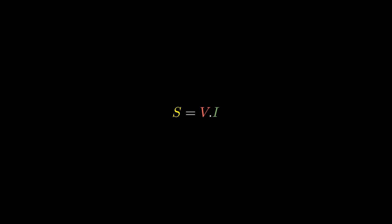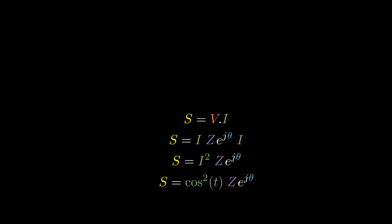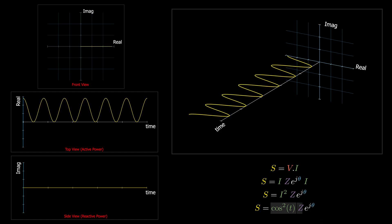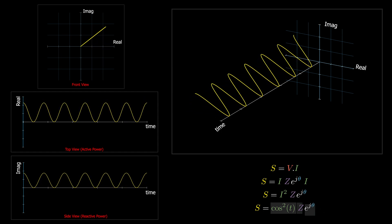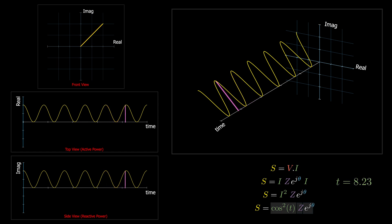The power consumed in the impedance is the voltage across the impedance times the current flowing through it — that is, the current squared times the impedance. First square the current, scale it by the impedance magnitude, then rotate it by theta degrees in the complex plane. This is called instantaneous complex power — a complex number with magnitude and phase, but the magnitude changes as time goes on.